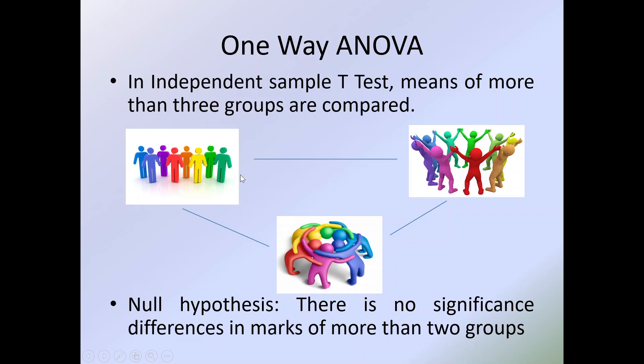There are three pairs. We write the alternative hypothesis as: there is a significant difference in marks in at least one pair of groups.